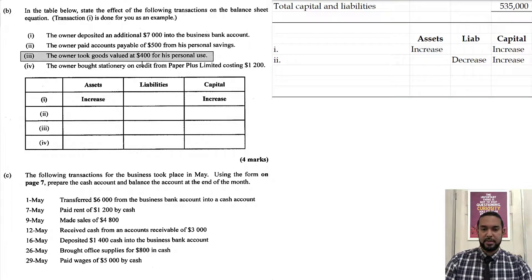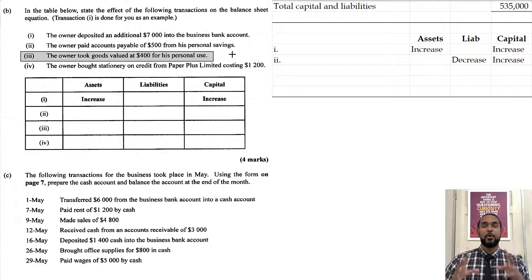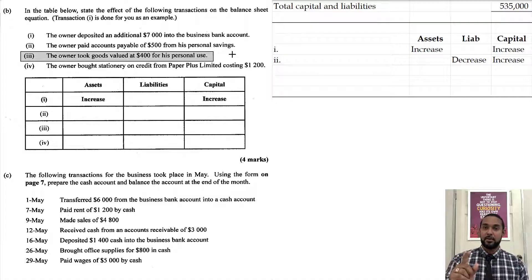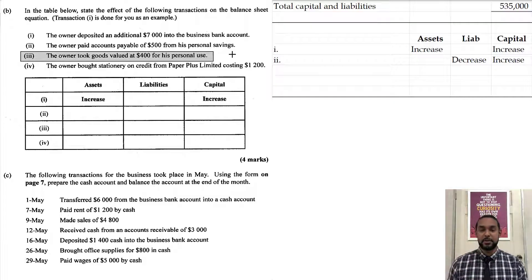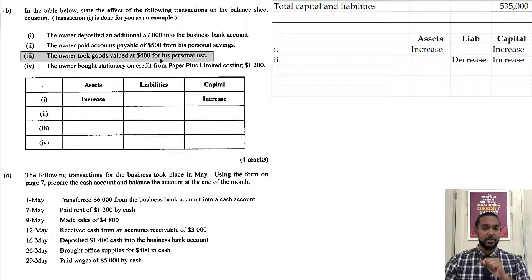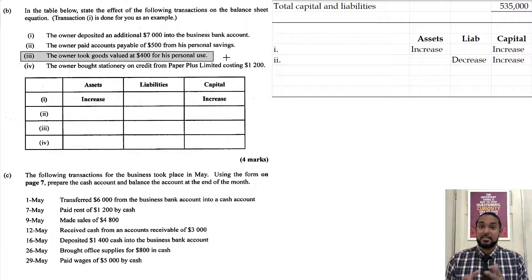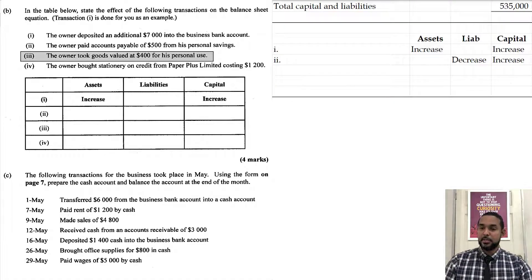Transaction three: the owner took goods valued at $400 for his personal use. When the owner puts in resources, capital increases; when the owner takes out resources, capital is decreasing — we use a drawings account for this. The owner taking goods means stock is decreasing. Stock is an asset, so assets are decreasing. And for his personal use means capital is decreasing because the owner is withdrawing resources. So both assets and capital will say decrease.